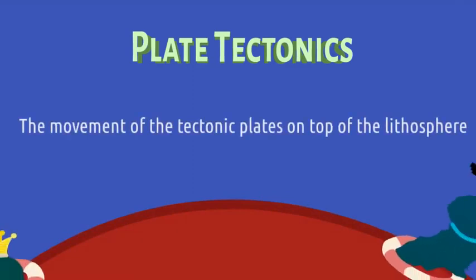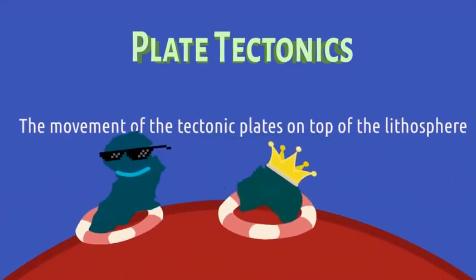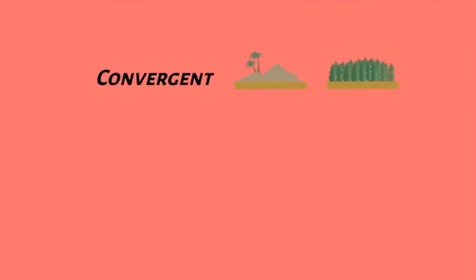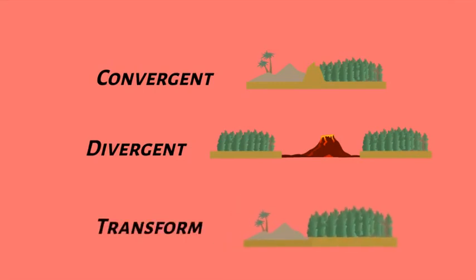Plate tectonics is the movement of the tectonic plates on top of the lithosphere. There are three types of tectonic plate movements: convergent, when two plates collide; divergent, when two plates fall apart; and transform, when two plates slide past each other.